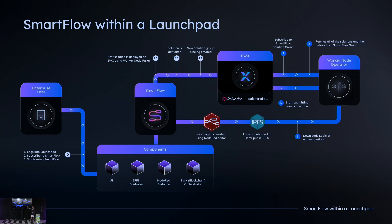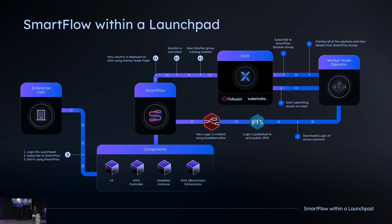This no-code tool, which we call Smart Flow, is available on Launchpad — a platform in Energy Web that provides various ecosystem products in a fully enterprise-grade software-as-a-service manner. From the enterprise perspective, they build their business cases into Smart Flows that become their solutions, get deployed on EWX, activated, and grouped into business units. Smart Flows are built using Node-RED — an open-source flow editor where you can drag, drop, and wire flows together to form the business flow. The flows are then exported into flow files, uploaded to our semi-public IPFS, and downloaded by the worker nodes.